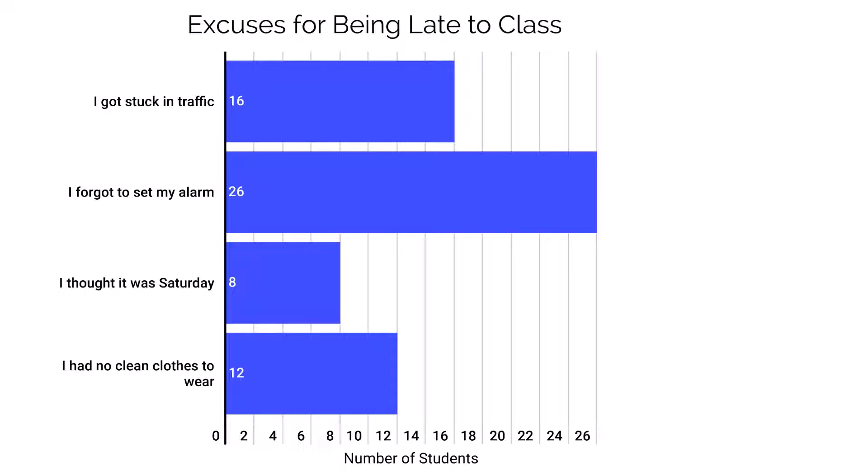As you will see in our next example, a bar chart is not always just showing the count for a category — it can also include some other numerical measure. Therefore, in order to construct a bar chart, we need one qualitative or categorical variable and one numerical or quantitative variable.